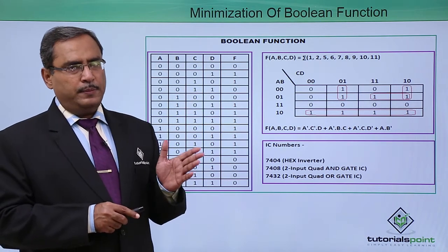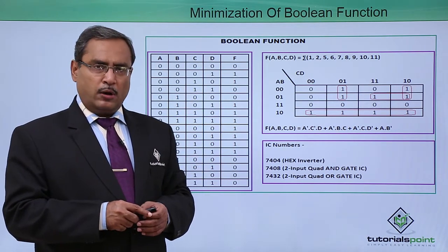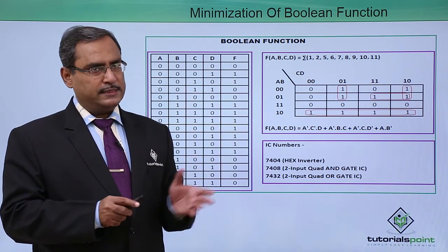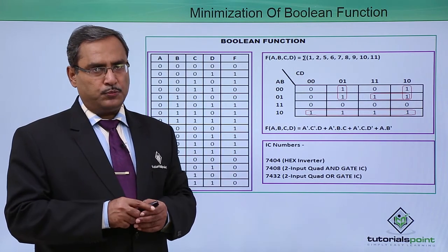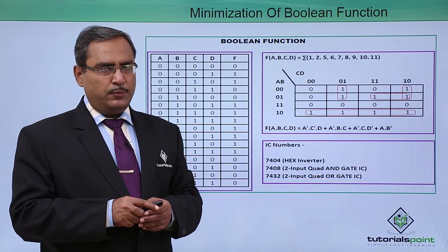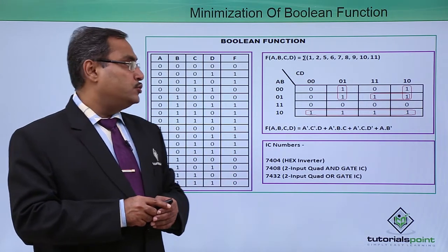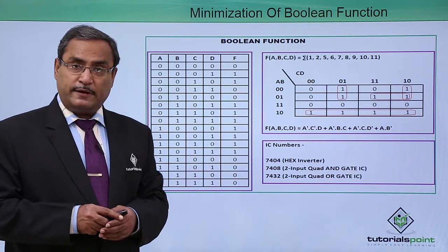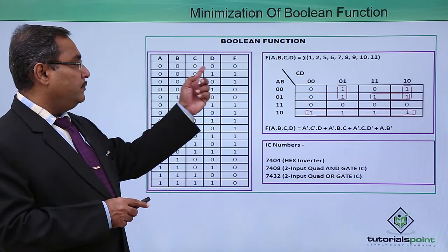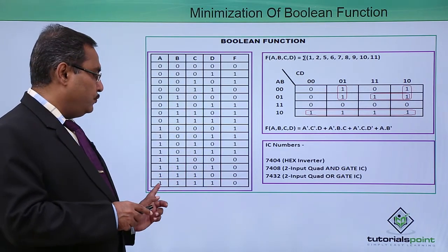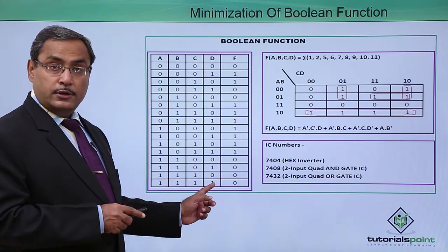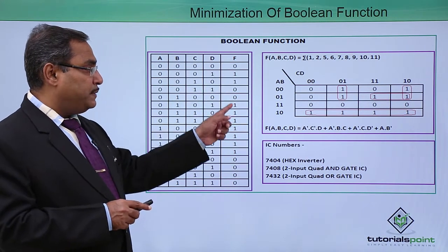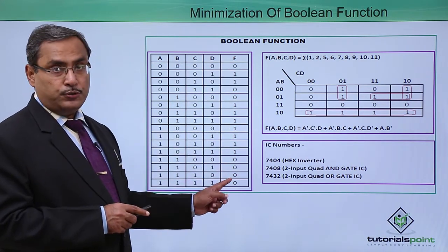Let the inputs be A, B, C, D and one output line — that is our F, the Boolean function output. As we are having 4 input lines, we will be having 16 different combinations ranging from 0 to 15. 16 different combinations are there and this is the respective output.